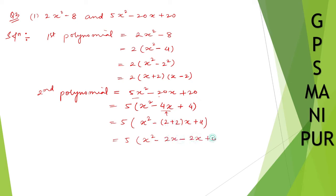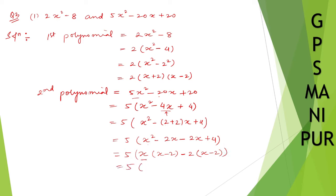Next it will be x(x minus 2) minus 2(x minus 2), so take x minus 2 common. It becomes 5 into (x minus 2)(x minus 2), which you can write as 5(x minus 2) squared. So that's the factored form of the second polynomial.